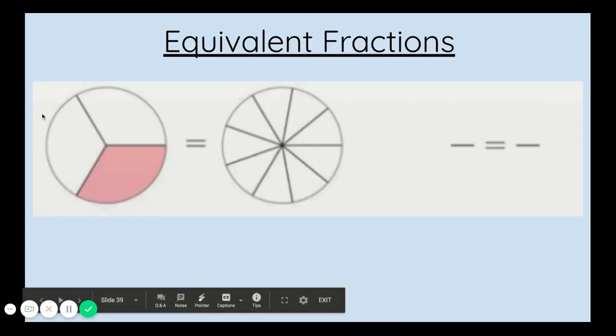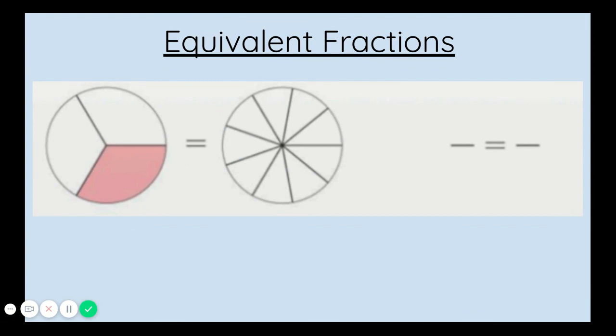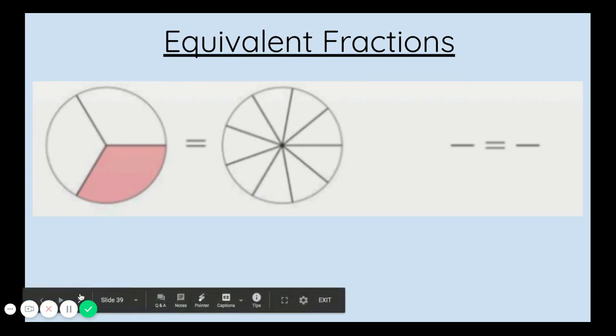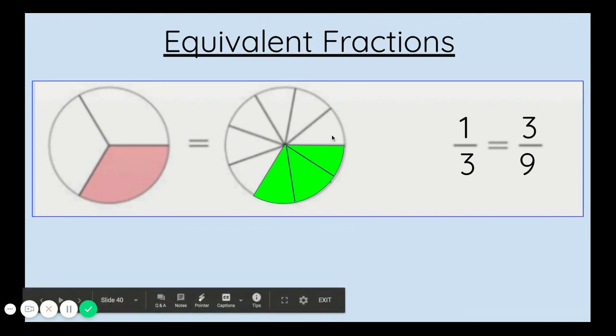This is an example of a practice problem from your packet. The one shape is already shaded for you, one third. You have to shade to find the equivalent fraction to one third. So all you have to do is try and figure out how many of these ninths we need to color in to equal one third. When we do that, we find one third is equal or equivalent to three ninths.